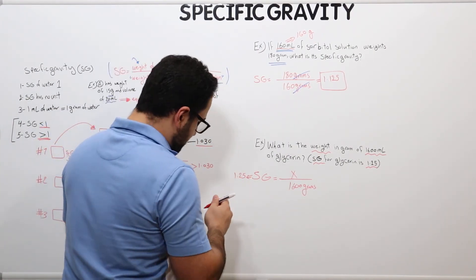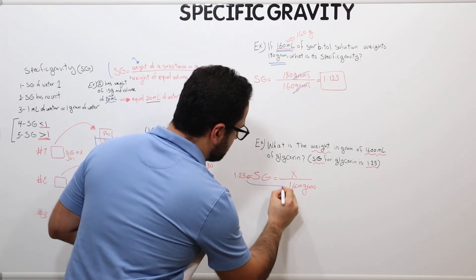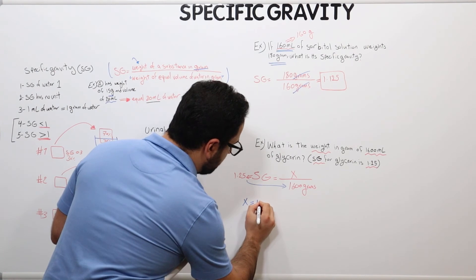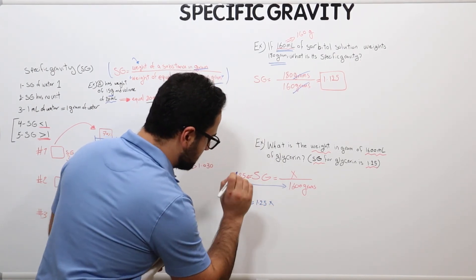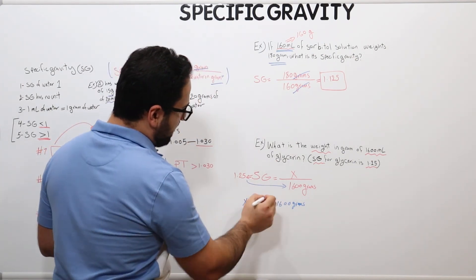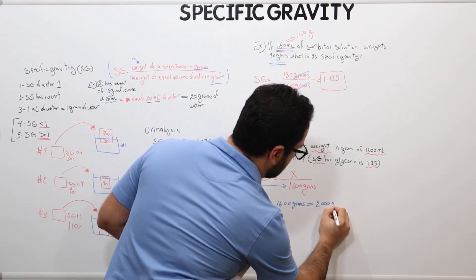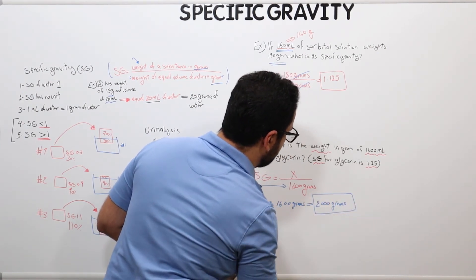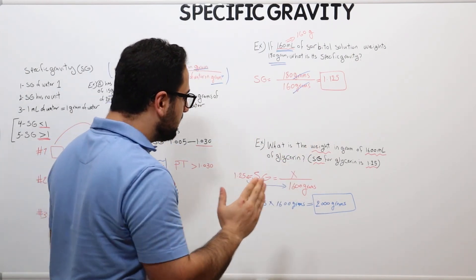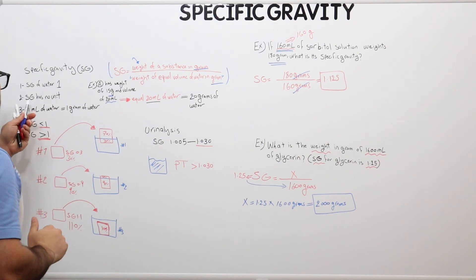The specific gravity is known as 1.25, so I solve for x by multiplying both sides. X, which is the weight of glycerin, equals 1.25 times 1,600 grams, which gives 2,000 grams. That's the final answer. Note there is a unit here because we're solving for weight, not for specific gravity — and remember, specific gravity has no unit.